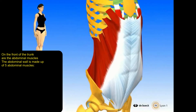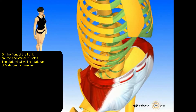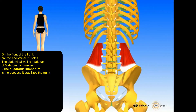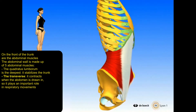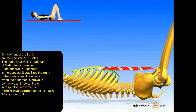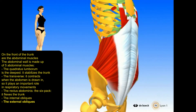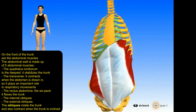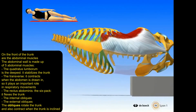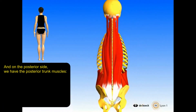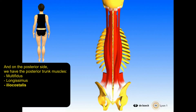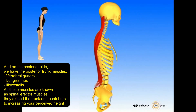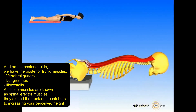Trunk muscles. On the front of the trunk are five abdominal muscles. The quadratus lumborum is the deepest and stabilizes the trunk. The transverse contracts when the abdomen is drawn in, playing an important role in respiratory movements. The rectus abdominis, the six-pack, flexes the trunk. The internal and external obliques rotate and incline the trunk. On the posterior side, the spinal erector muscles — the multifidus, longissimus, and iliocostalis — extend the trunk and contribute to increasing perceived height.